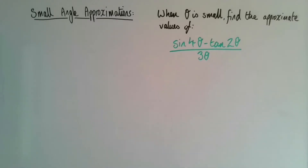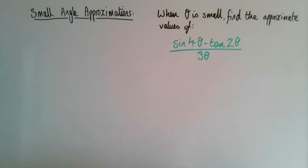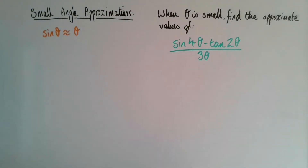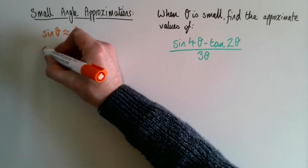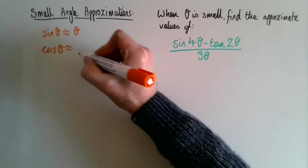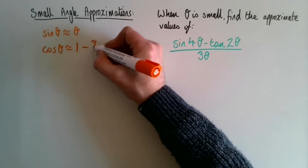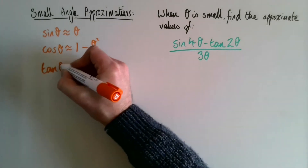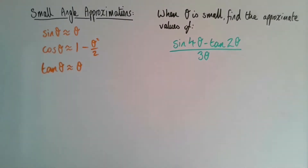Small angle approximations — here's our first problem. If you're in the exam and can't remember the formulas, turn to page six of the formula booklet. It tells you: sin θ is approximately equal to θ, so if the angle is very small there's no difference between the sine of the angle and the angle itself. Cos θ is a little trickier: it's 1 minus θ² over 2. And tan θ is also very close to the angle itself.